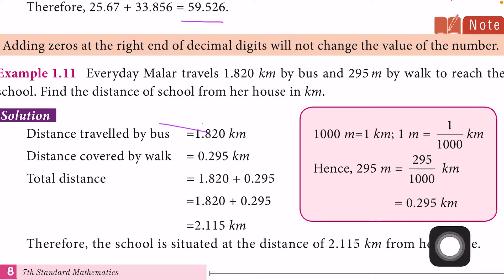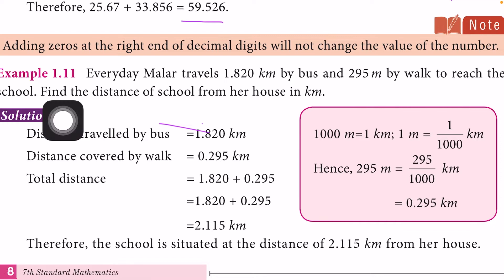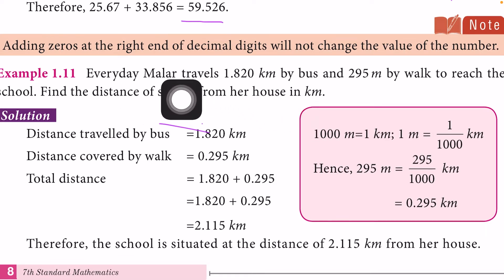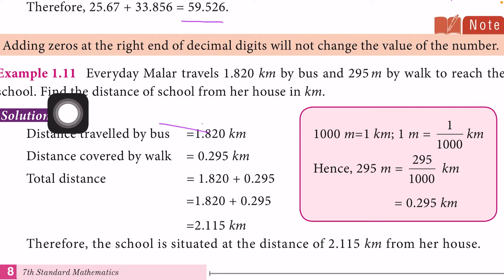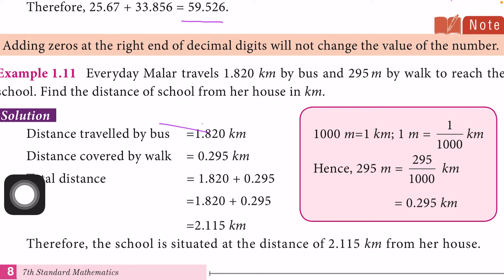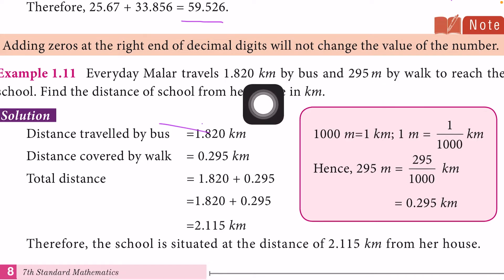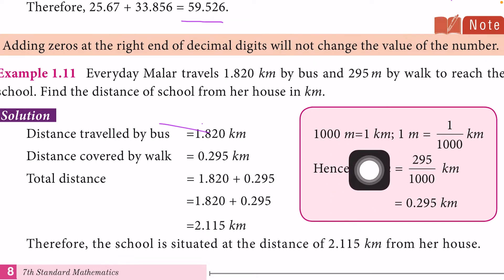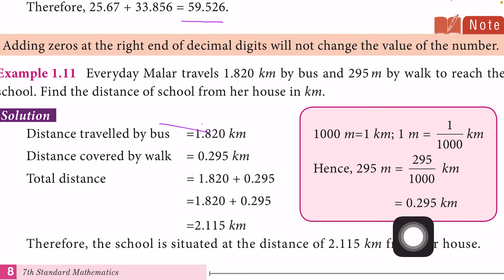Next example: Every day Mala travels 1.820 kilometers by bus and 295 meters by walk to reach the school. We have to find the total distance. Distance travelled by bus is 1.820 kilometers. Distance travelled by walk is 295 meters, but we have to find the answer in kilometers. Since 1 kilometer equals 1000 meters, 295 meters divided by 1000 equals 0.295 kilometers.